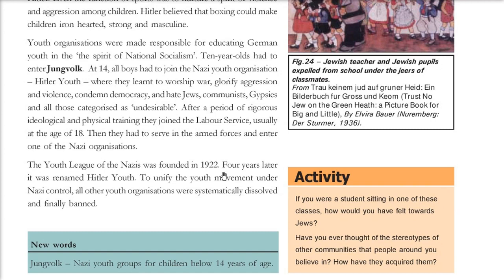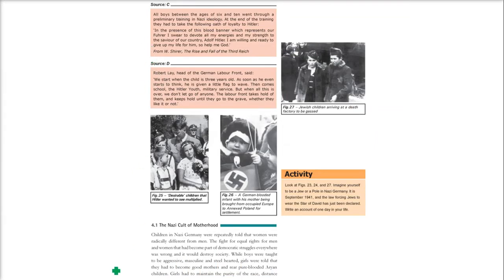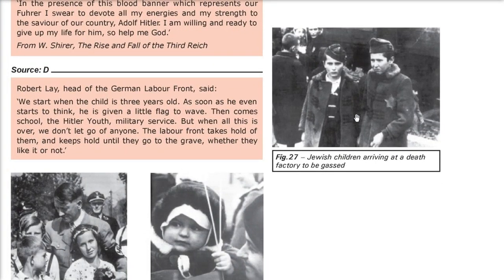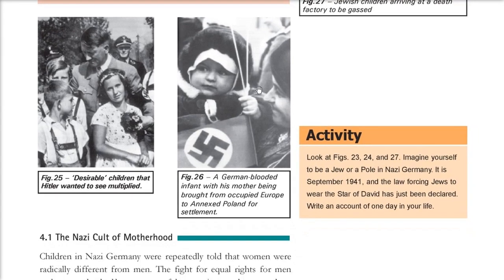The Youth League of the Nazis was founded in 1922 and was later named Hitler Youth. All other organizations were banned. The Jungvolk was the Nazi youth group for children below 14. Images show Jewish teachers and pupils being expelled from schools while their classmates danced and were happy.